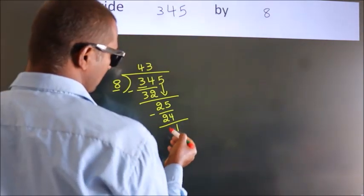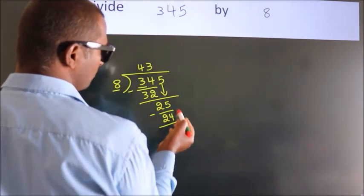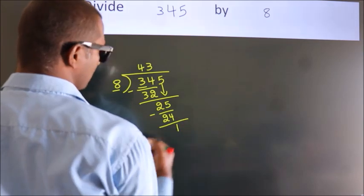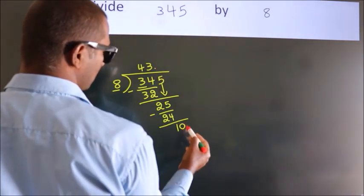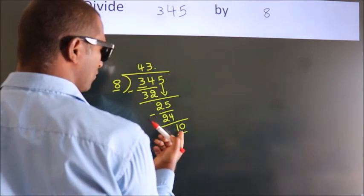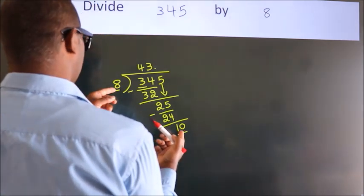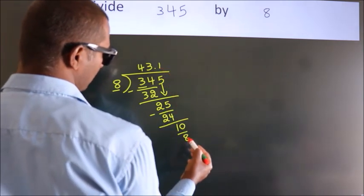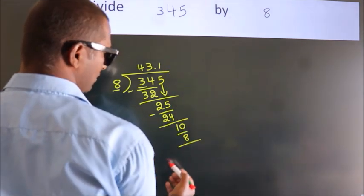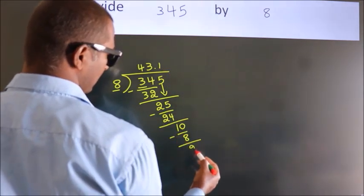After this, no more numbers to bring down. So what we do is we put a dot and take 0. So, 10. A number close to 10 in the 8 table is 8 ones, 8. Now we subtract. We get 2.